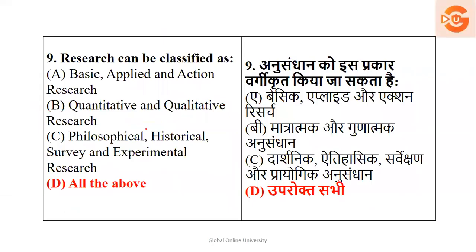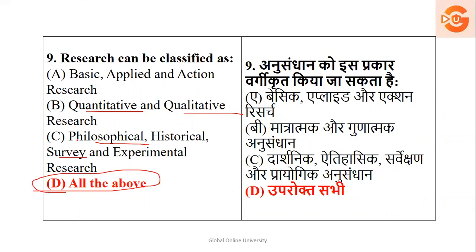Question 9 is related to the same topic: research can be classified as basic, applied, action; quantitative or qualitative; philosophical, historical, survey, experimental — or all of the above. The right answer is option D — all of the above — covering basic, applied, action, qualitative, quantitative, philosophical, historical, survey, and experimental.